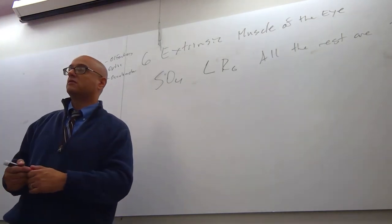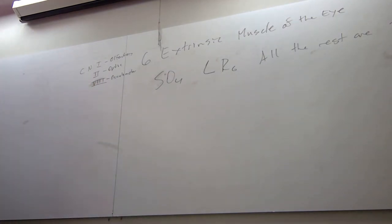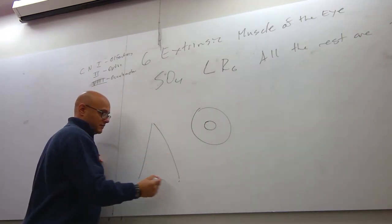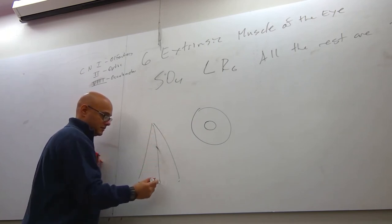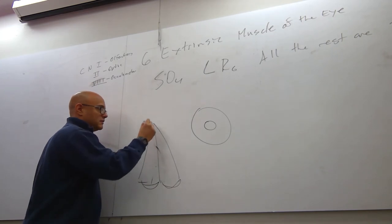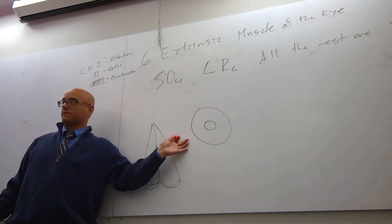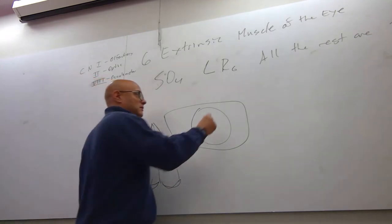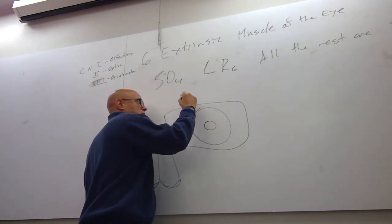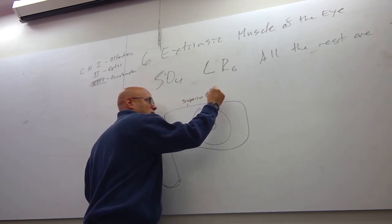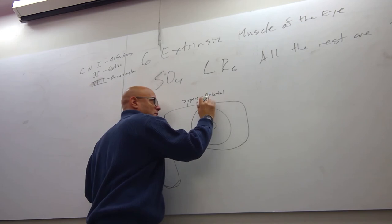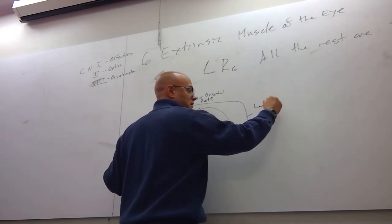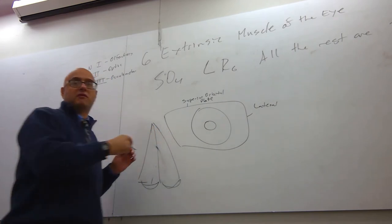So six extrinsic muscles to the eye. Here's my eye. So we're talking about left eye. So the left eyeball sits within these plates. We call this the superior orbital plate. And if this is superior, then what would this plate be? Inferior. And this one, what do we call this one? Lateral orbital plate. And what do we call that one? Medial orbital plate.